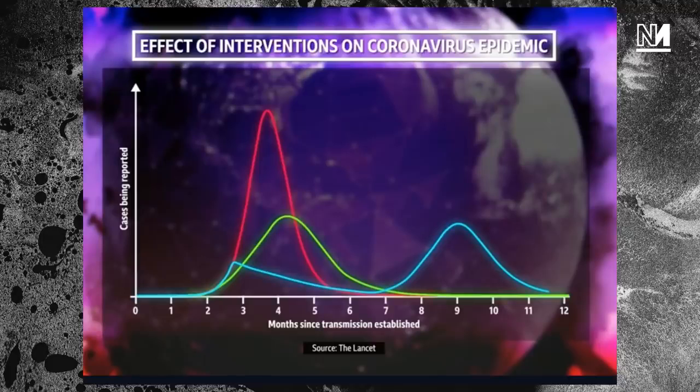If it all happens that quickly, there's no time to protect the vulnerable. Also, society just collapses — you can't run supply chains, transport links, if one in four people is sick or something. Isn't that the main concern? I thought that was the main concern — that you basically can't maintain public order and the reproduction of society?